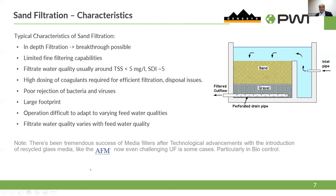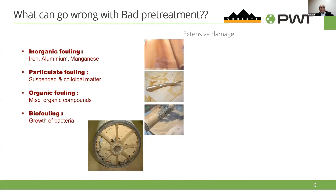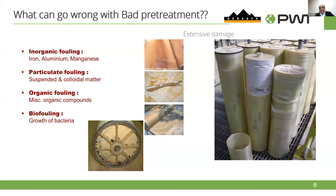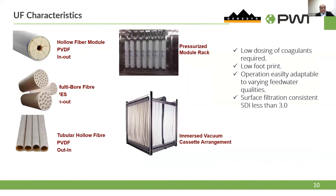Almost every plant in Singapore uses UF. There has been some development — as our next speaker will discuss — called AFM media, a recycled glass media with biocontrol ability that can actually be a game changer. What can go wrong with bad pretreatment? It can cause inorganic fouling or organic fouling, which can make extensive damage to the membranes.